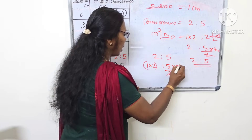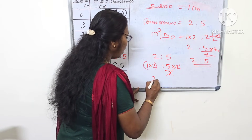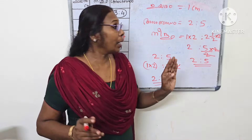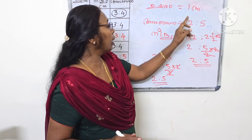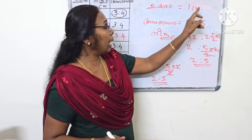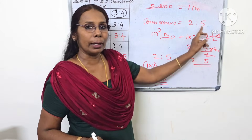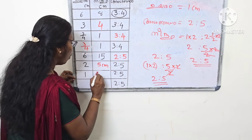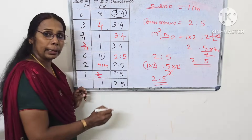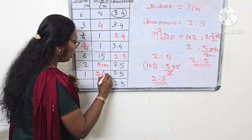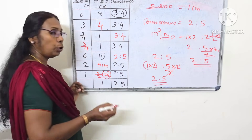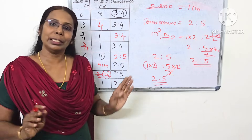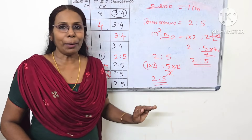Then we will cancel. So what do we get here? 2 is the answer. If we write something here, it is very clear. The answer 1 is equal to 2. So 2 is equal to 2, 1 is equal to 2, 2 is equal to 2.